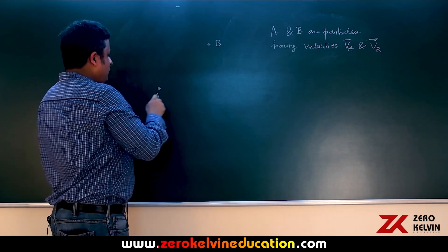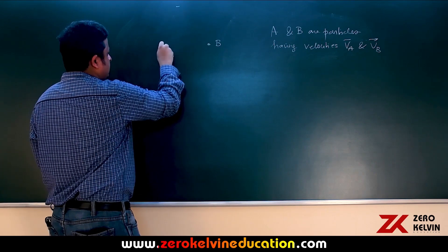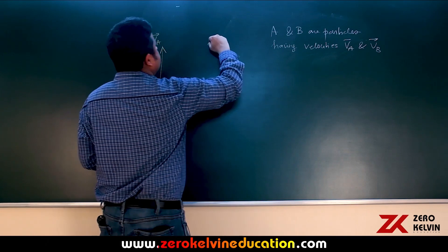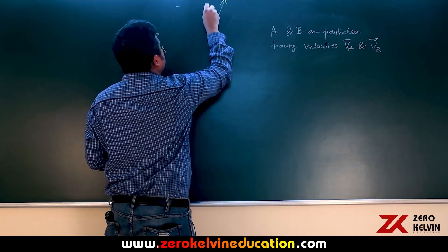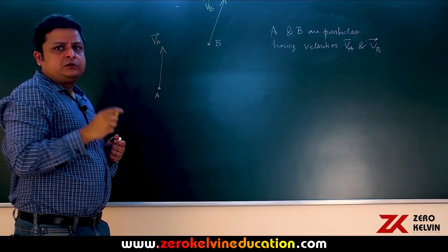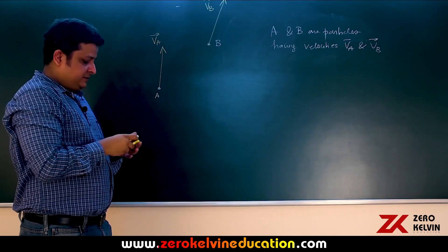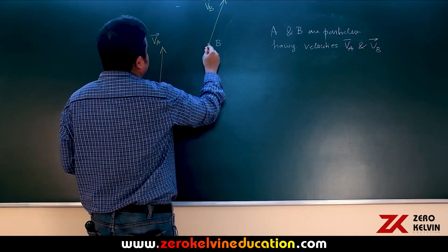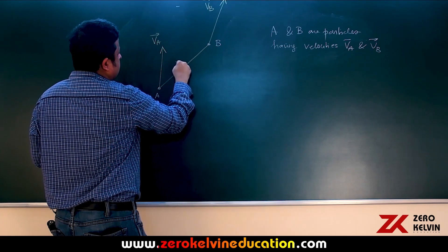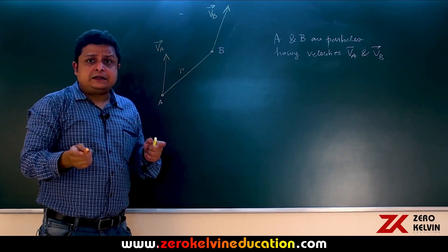We will draw these velocity vectors — this is Va here and this is Vb here. We join particles A and B by a line, so the distance between A and B is r at a certain instant.